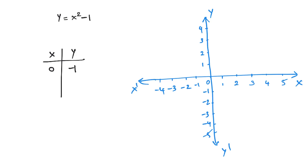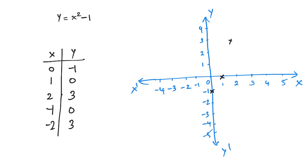x equals minus 1, x equals 0, y equals minus 1. For x equals 2: 2 squared minus 1 is 4 minus 1, which is 3. So when x equals 2, y equals 3. For x equals minus 1: minus 1 squared is 1, and 1 minus 1 equals 0. For x equals minus 2: minus 2 squared is 4, and 4 minus 1 equals 3. So minus 2 gives y equals 3.